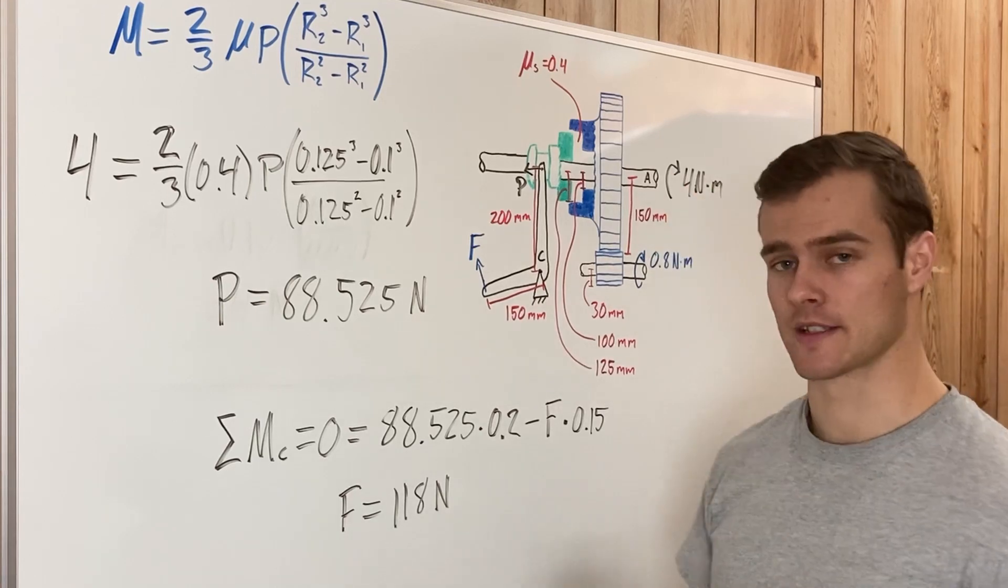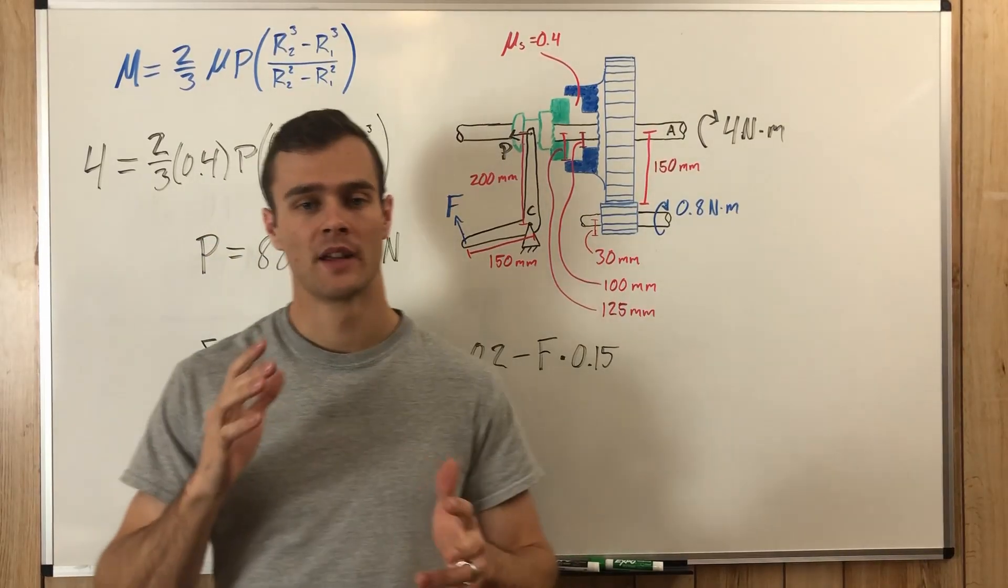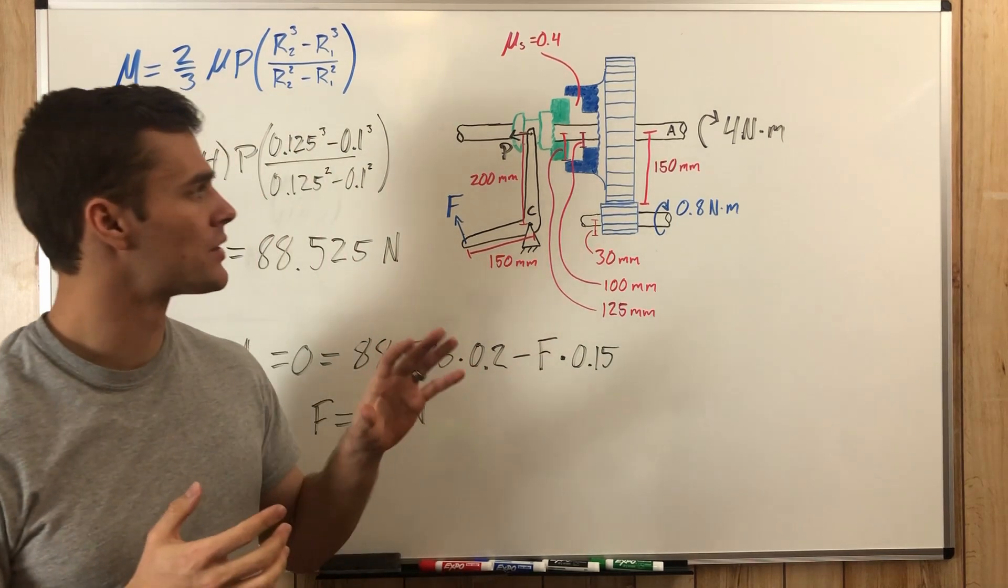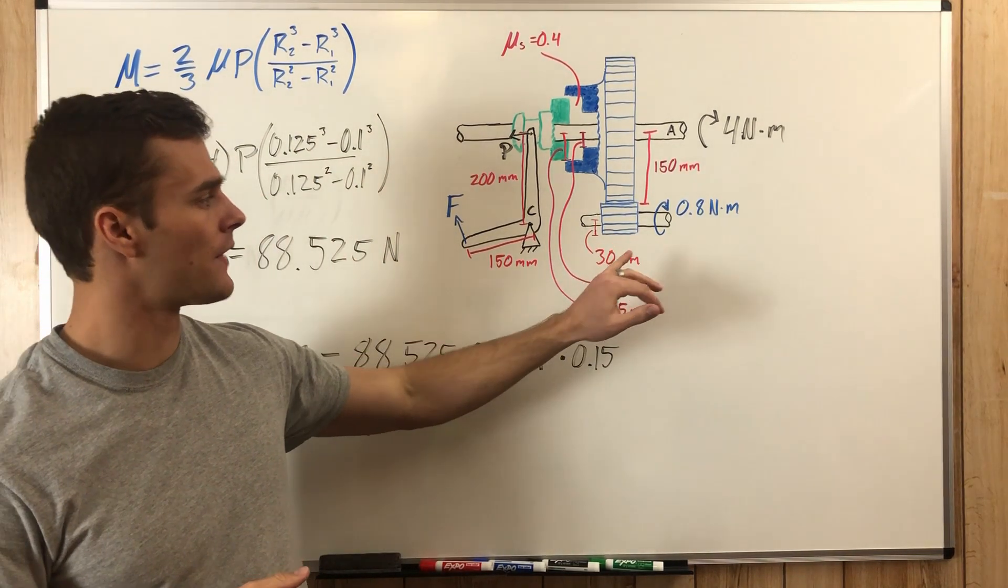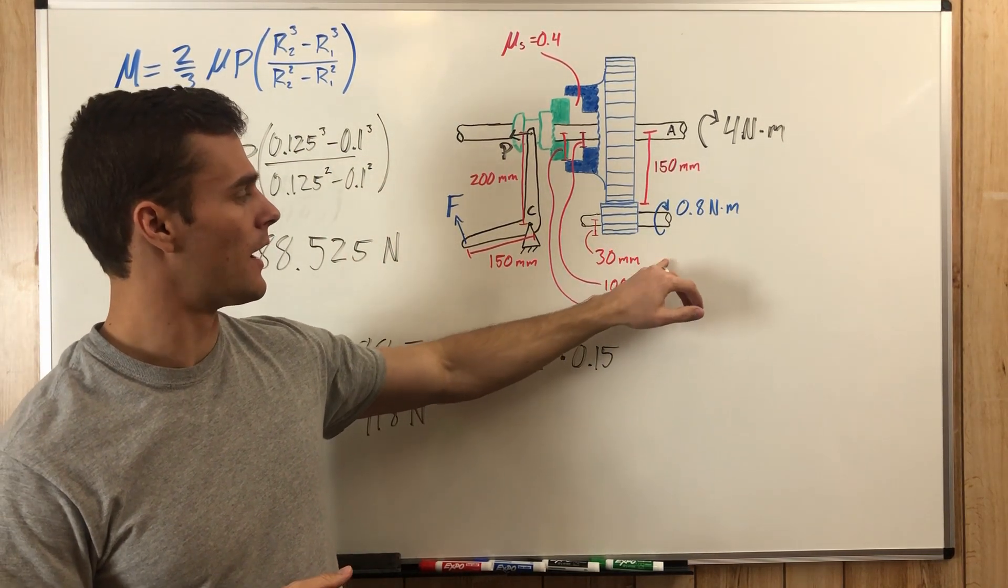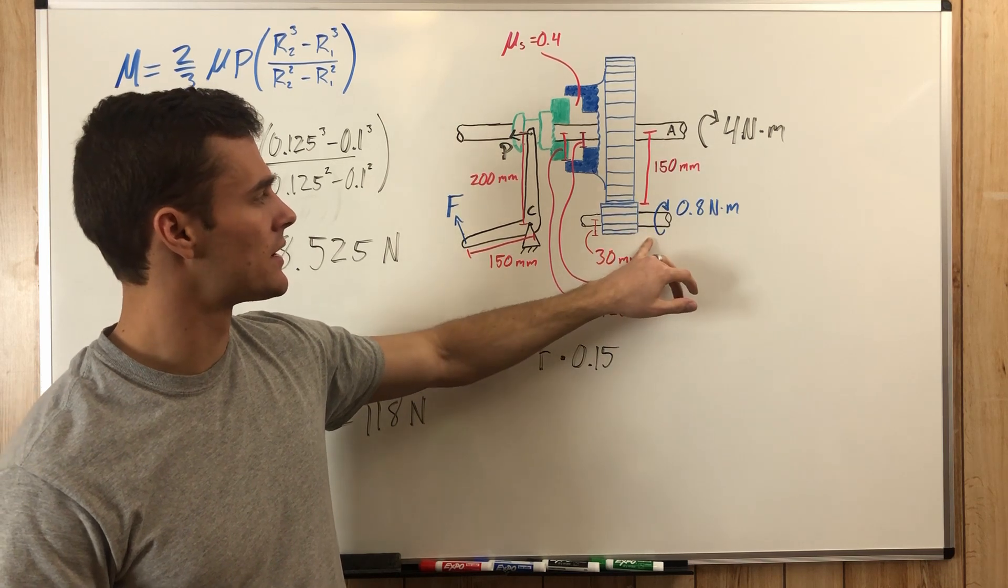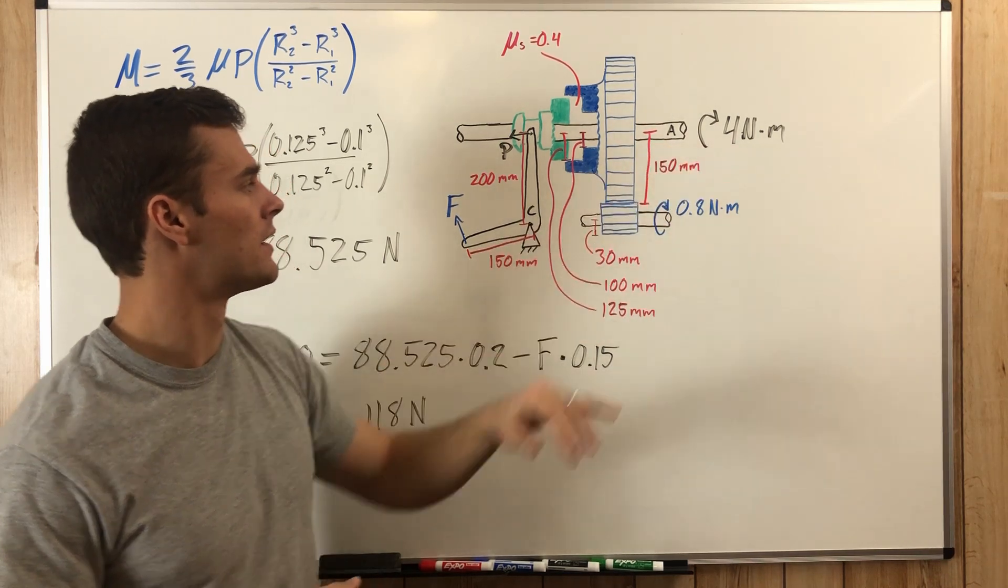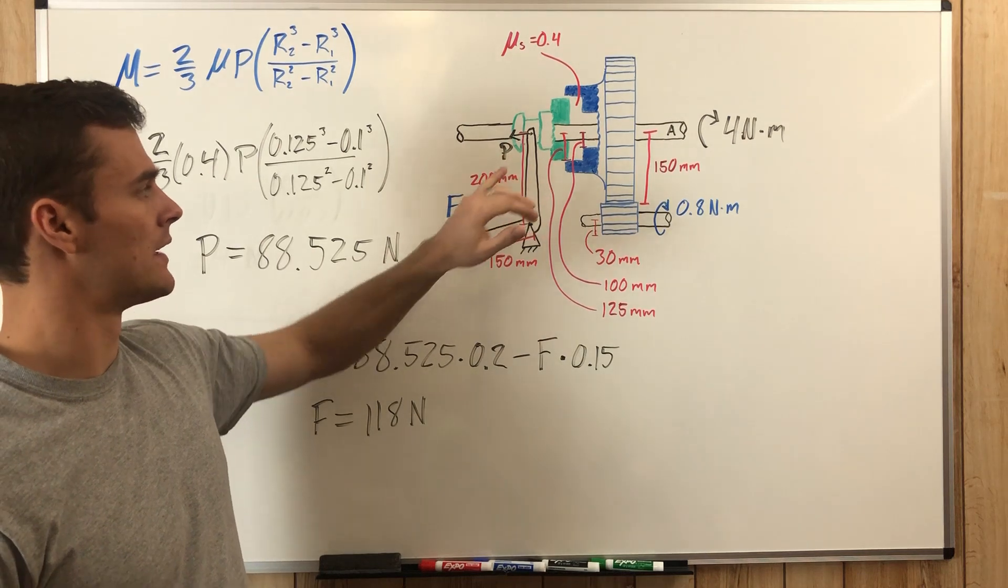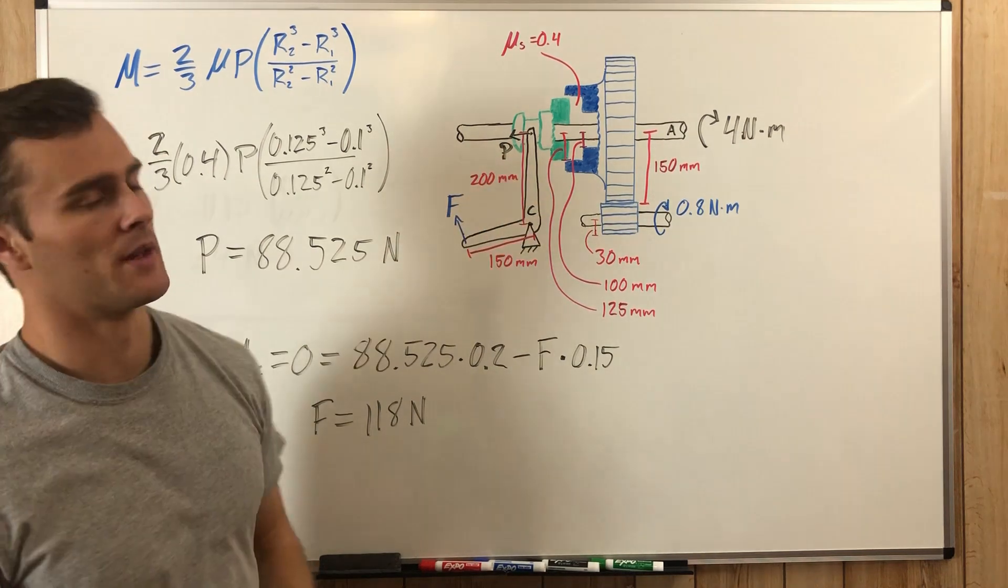It's kind of complicated, but the most difficult parts are just finding out how to convert this moment over to this shaft and then figure out how to get F when we find P.